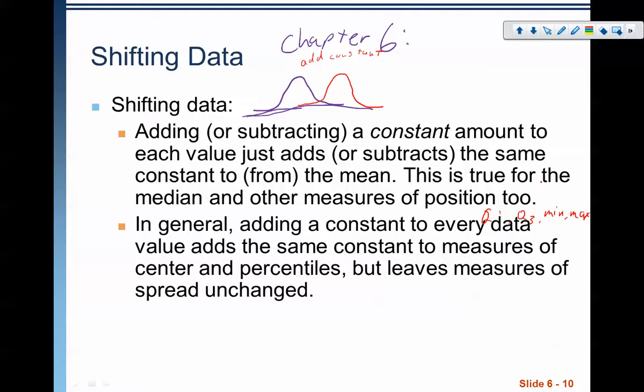Our measures of position have changed, but notice that our measures of spread have not changed. Adding a constant to every value adds the same constant to measures of center and percentiles, but leaves measures of spread unchanged. Simply adding the same amount isn't going to change the overall spread of the data. Therefore, measures of spread like standard deviation, the range, or the interquartile range all remain unchanged because we are simply shifting the data to the left and to the right.